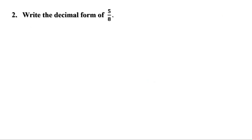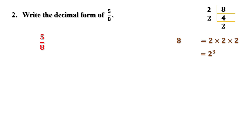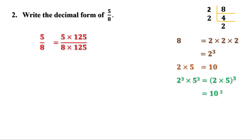Second problem: write the decimal form of 5 by 8. The denominator is 8, and we have to make it a power of 10. We know 8 can be factorized as 2 cube. Since 2 into 5 is 10, 2 cube into 5 cube is 10 cube. So 8 must be multiplied by 125 to make 1000. Multiplying numerator and denominator by 125 gives 5 into 125 by 8 into 125, which is 625 by 1000. There should be 3 digits after the decimal point, so we can write it as 0.625.